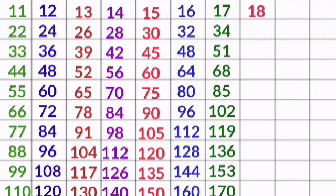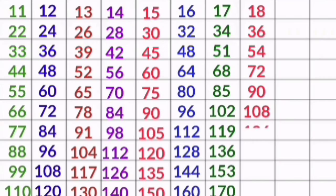18 1s are 18, 18 2s are 36, 18 3s are 54, 18 4s are 72, 18 5s are 90, 18 6s are 108, 18 7s are 126, 18 8s are 144, 18 9s are 162, 18 10s are 180.